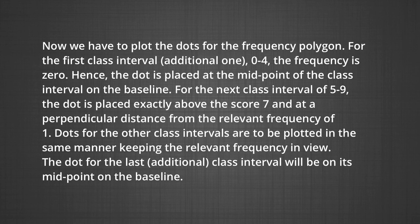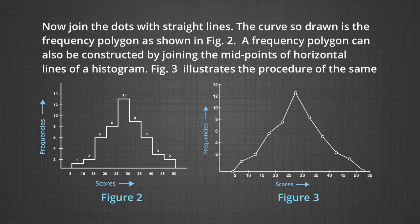Now we plot the dots for the frequency polygon. For the additional first class interval 0 to 4, the frequency is 0, so the dot is placed at its midpoint on the baseline. For class interval 5 to 9, the dot is placed exactly above the score of 7 at a perpendicular distance corresponding to the frequency of 1. Dots for the other class intervals are plotted in the same manner, keeping the relevant frequency in view. The dot for the last additional class interval is on its midpoint on the baseline. Joining the dots with straight lines produces the frequency polygon, as shown in figure 2. A frequency polygon can also be constructed by joining the midpoints of the horizontal tops of the histogram bars; figure 3 illustrates this procedure.